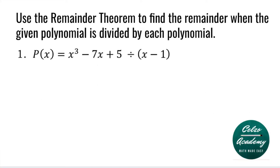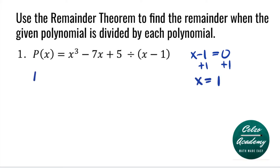Question number one: P of X is equal to X cubed minus 7X plus 5, divided by X minus 1. Our divisor is X minus 1. Solving for the C value, we have X minus 1 is equal to 0. Adding 1 to both sides, our X value is equal to 1. So to find the remainder, we need to evaluate P of 1.